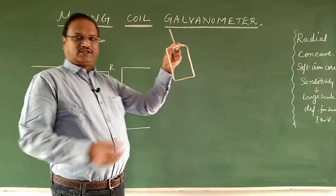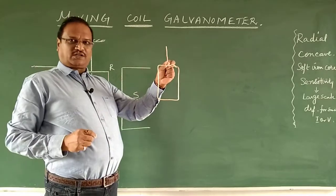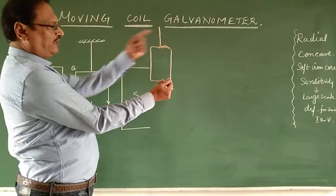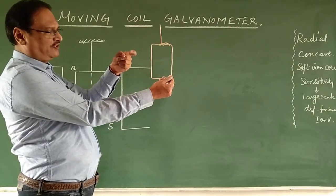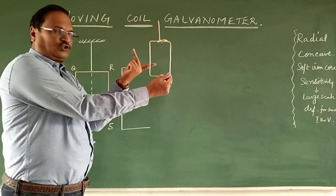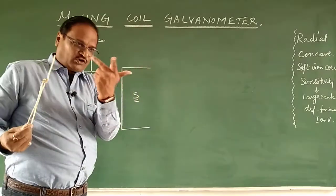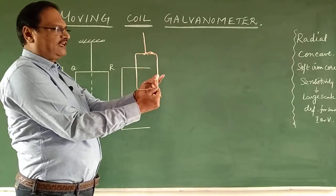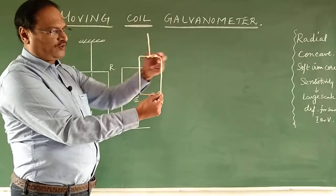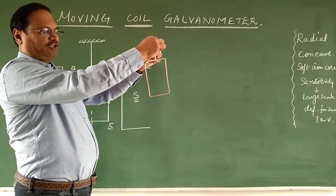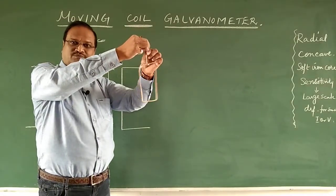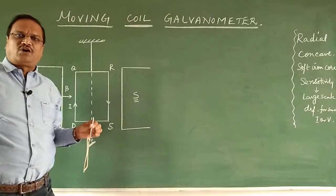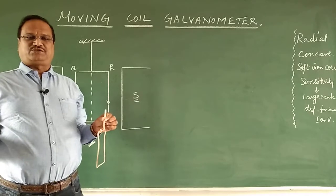I have taken a rectangular coil with a current flowing through it. According to Fleming's left-hand rule, when the index finger represents the magnetic field direction, the force on one side acts inward into the board, and on the other side it acts outward. This sets up a torque — a rotational motion. This is the principle of the moving coil galvanometer.